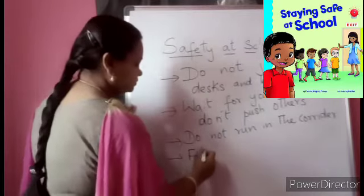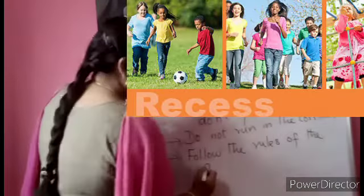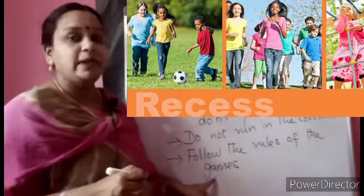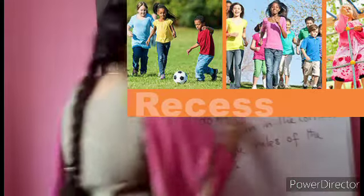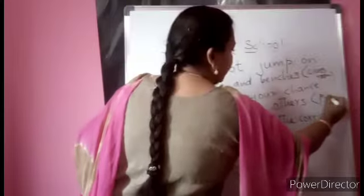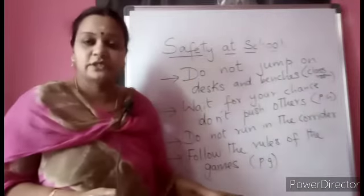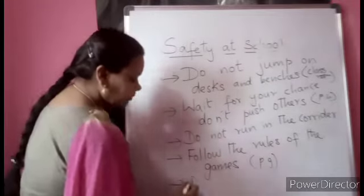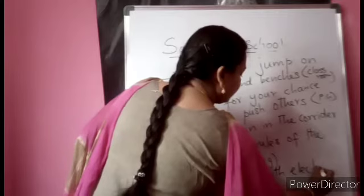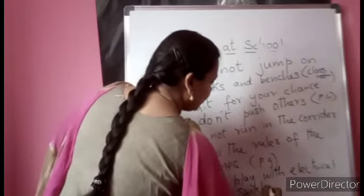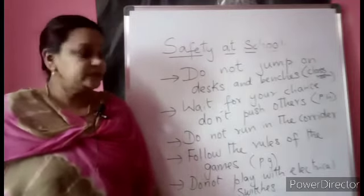And follow the rules of the game — any game you are playing. When you follow the rules, you definitely won't get hurt. Do not jump on desks and benches — that is inside the classroom. Do not run inside the classroom. Wait for your chance. Do not push others — also in the playground. Do not run in the corridor. Follow the rules — also in the playground when you are there. And very importantly: don't play with electrical switches in the classroom or with electrical and electronic equipment in the computer lab — that may lead to a severe accident.